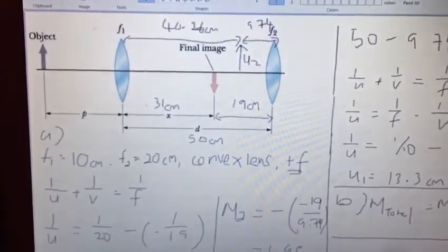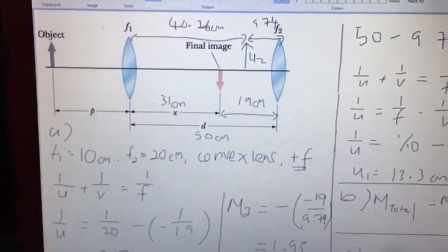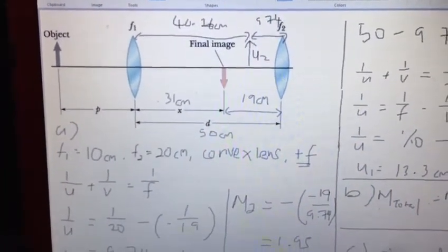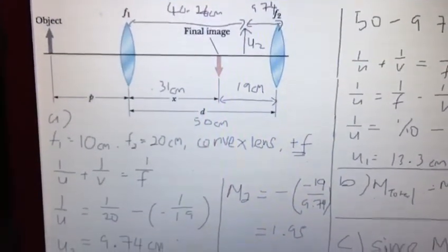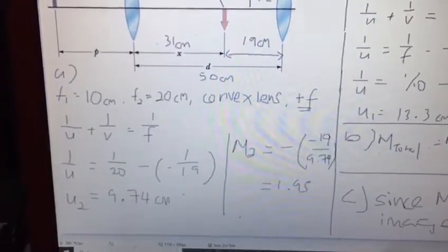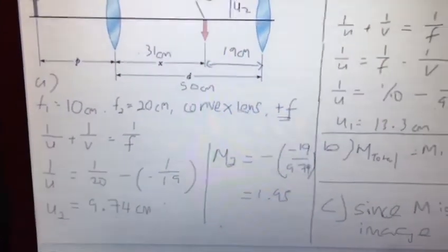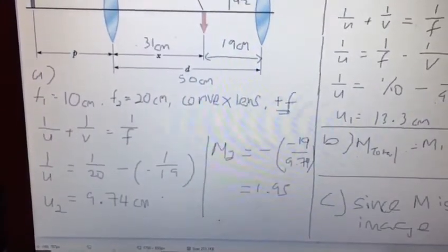Since it is a convex lens, f is positive. By using the thin lens equation and substituting all the given information, we can get u2 equals 9.74 cm. For the magnification, we can use the magnification formula and we get 1.95.